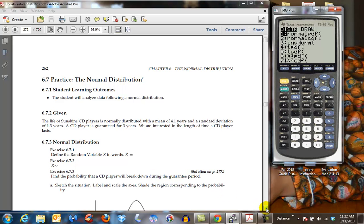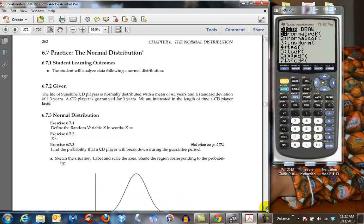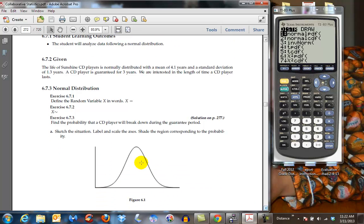So we could graph this and here's your graph. You'd have your mean, we would draw in our mean, we would draw in where three years is. Three years is over here and we want to find out the probability that it's going to be less than three years.